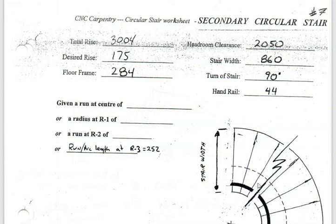This is a math walkthrough video on how to calculate many of the dimensions needed on a circular stair. In this case we call it secondary, meaning not a primary exit — secondary dwelling — so it falls under a different code than the primary exit. This is a companion to fourth year carpentry apprenticeship.